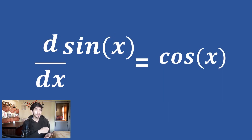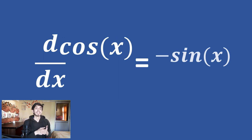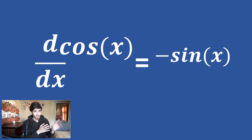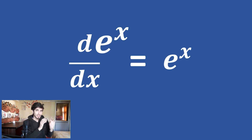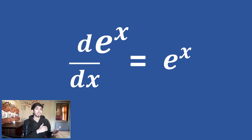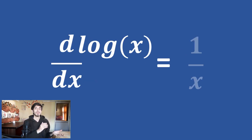Differentiation of sin x is cos x, and the differentiation of cos x is minus sin x. Differentiation of e raised to the power x is simply e raised to the power x — this is the only function which does not change under differentiation. And differentiation of log x is 1 upon x. All these formulas are derived from the fundamental theorem of differentiation, so always keep that in mind.